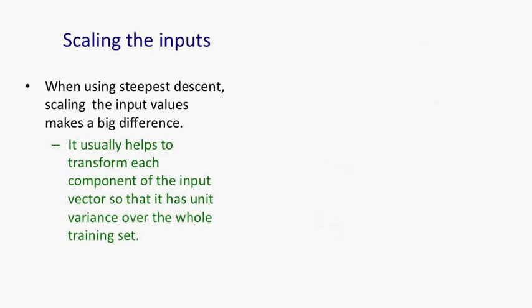Another thing that makes a big difference is scaling the inputs. When we're using steepest descent, scaling the input values is a very simple thing to do. We transform them so that each component of the input has unit variance over the whole training set, so that it has a typical value of one or minus one. So again, if we take this simple net with two weights and we look at the error surface, when the first component is very small and the second component is much bigger,